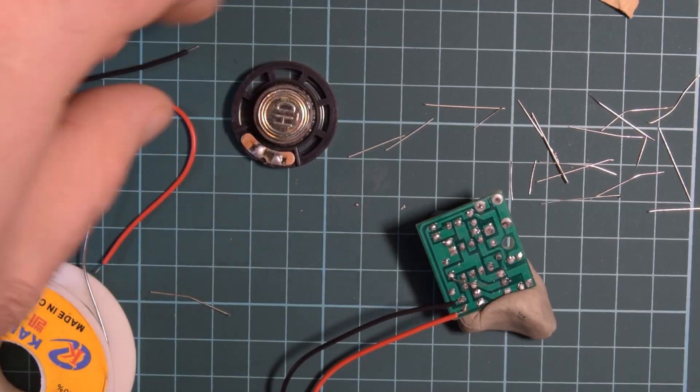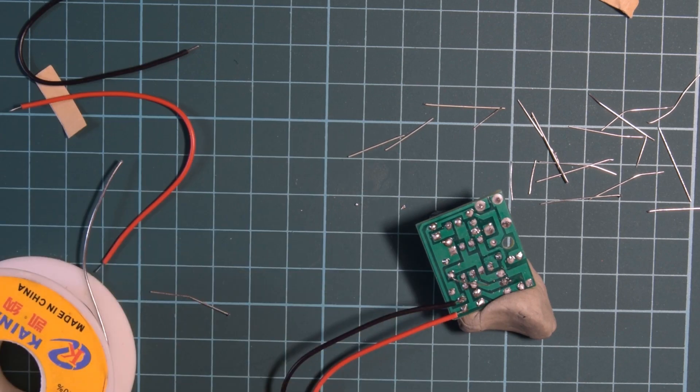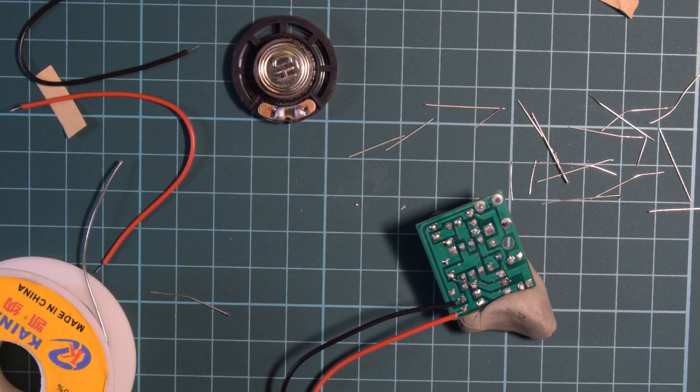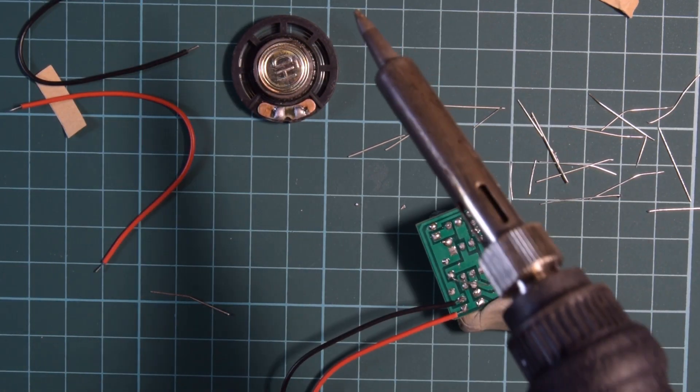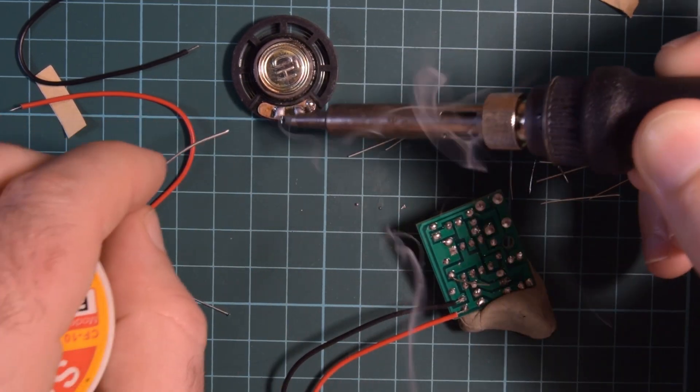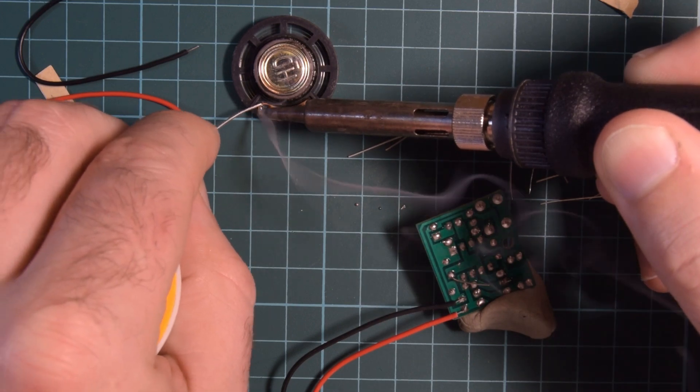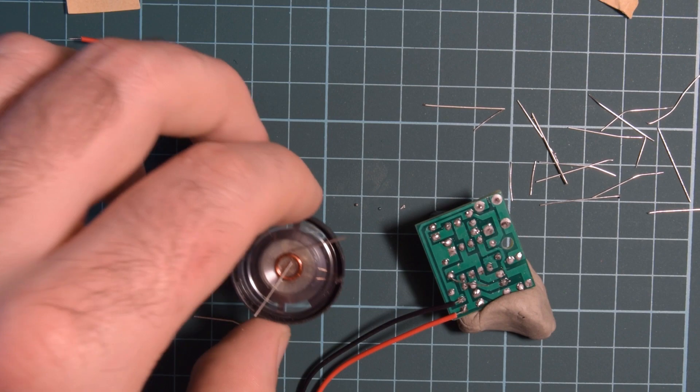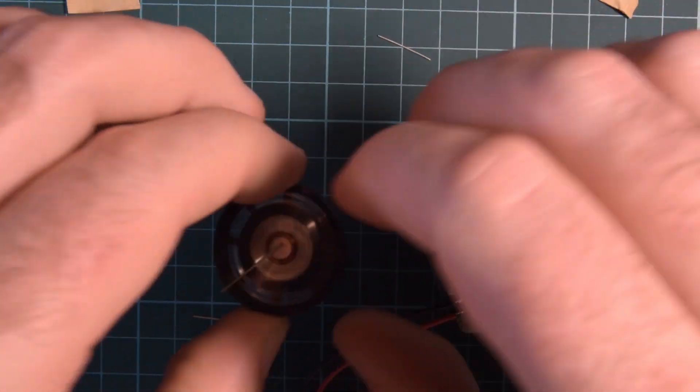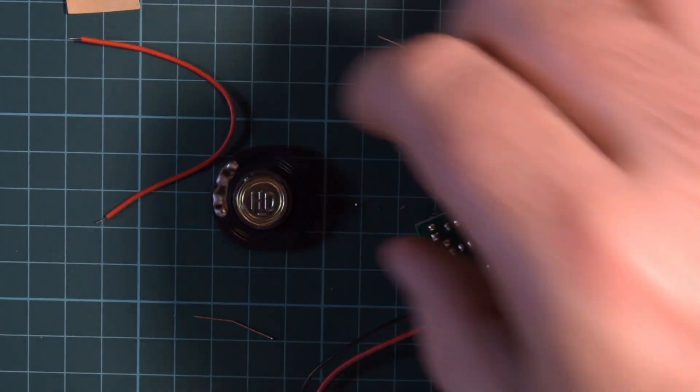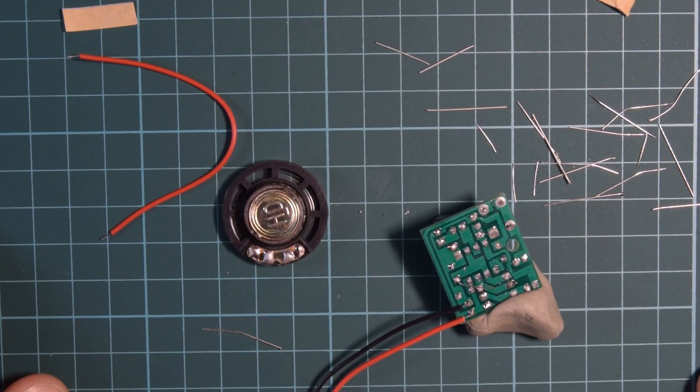Grab the speaker here. Is there a positive negative on the speaker? It doesn't look like it. There's a way to find out. You can connect the battery to it. But I don't think it's a big deal if I'm in phase or not. Oh no. The soldering iron got stuck to the magnet. Probably got that real hot. Hopefully I didn't demagnetize it too much.